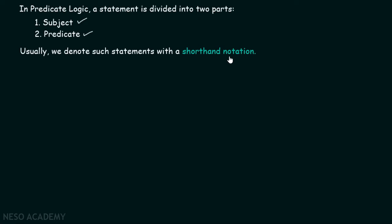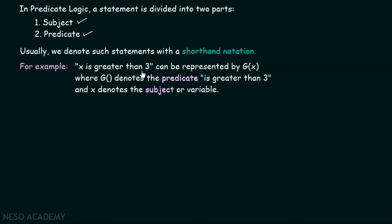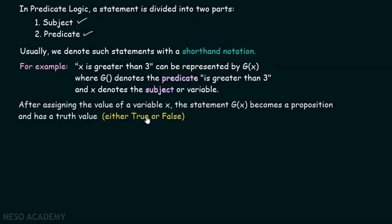Usually, we denote such statements with a shorthand notation. For example, consider the statement 'x is greater than three.' This can be represented by g(x), where g denotes the predicate 'is greater than three' and x denotes the subject or variable. Here the subject is x and 'is greater than three' is the predicate. It is clear that the first part of the sentence is the subject and the second part is the predicate that represents the property of that subject. This is the basic idea of predicate logic — the statement is divided into two parts. After assigning the value of variable x, the statement g(x) becomes a proposition and has a truth value.